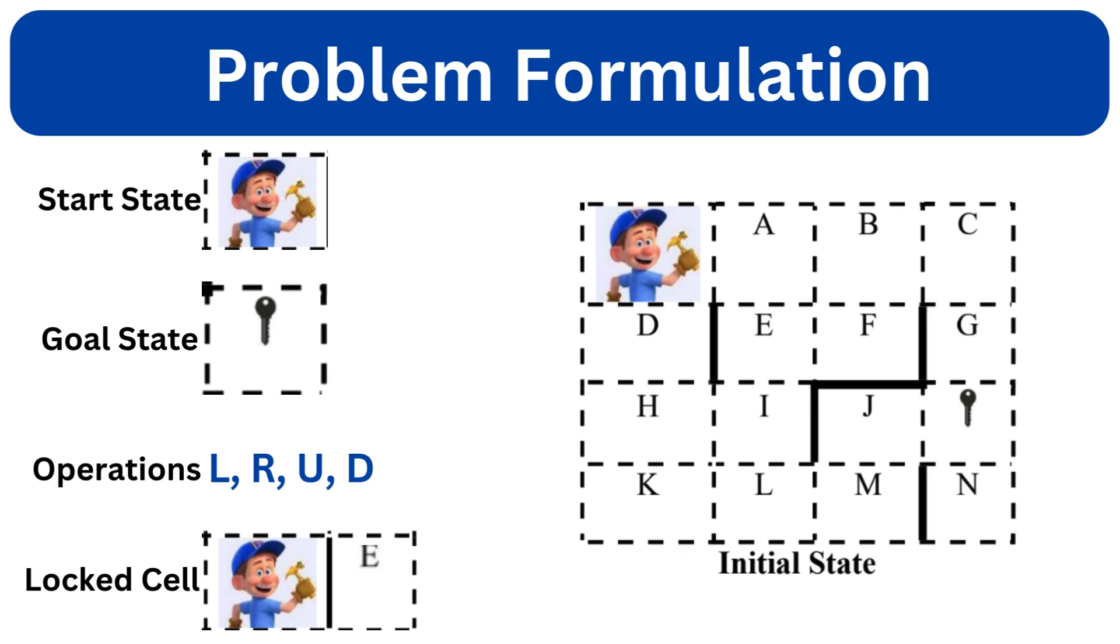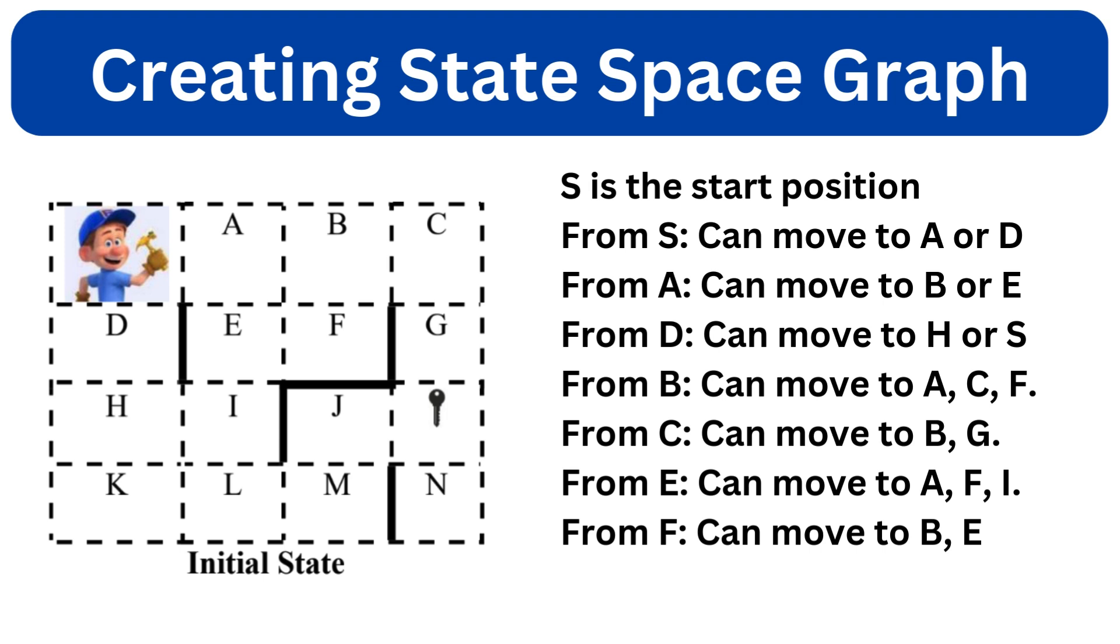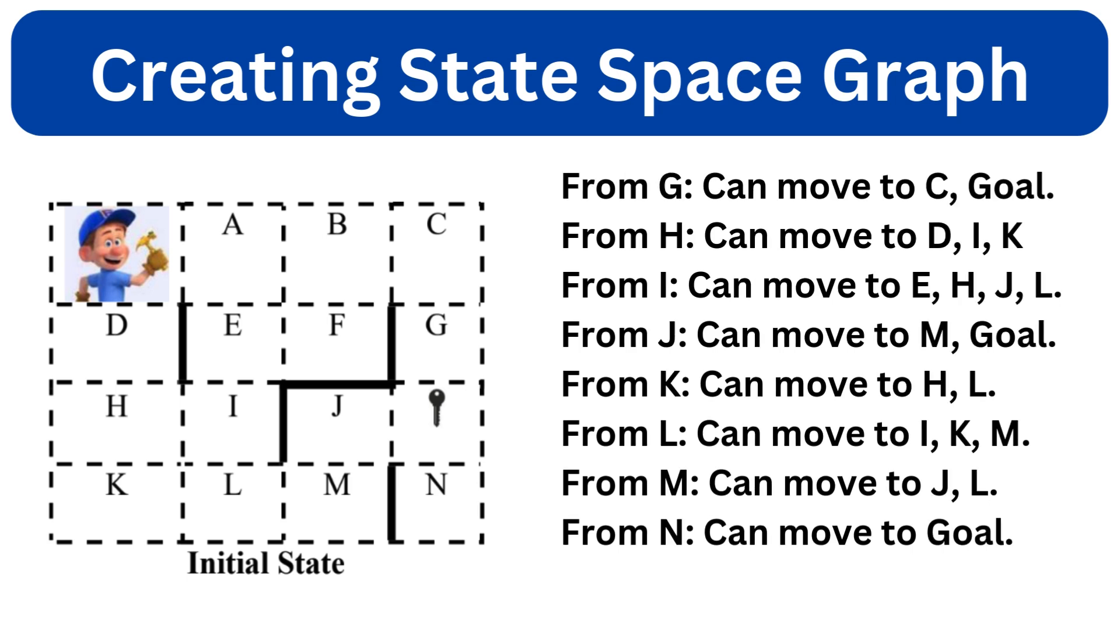Let's convert this into a graph where each location represents a node and each possible move between locations is an edge. Now based on the problem description we can list out the possible movements. S is the start position. From S the agent can move to A or D. From A it can move to B or E. From D it can move to H or S. From B it can move to A, C or F. So we have listed the possible movements of the agent from each node to the other node. It will help us in making the graph.